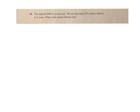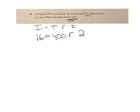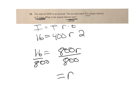Number 16: another interest question. Interest equals P times rate times time. You deposit $400 — that's my principal. The account earns $16 simple interest in two years — what is the rate? So 16 equals 400 times R times 2. 400 times 2 is 800R. Divide each side by 800: my rate is 16 divided by 800, which is 0.02. I make that into a percent — moving over 2 — so 2% is my rate.